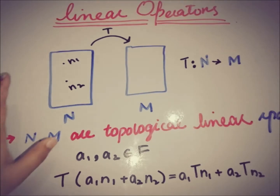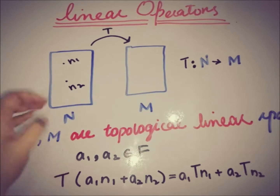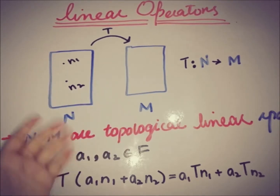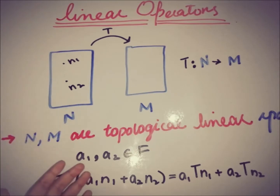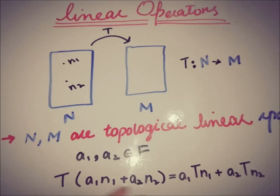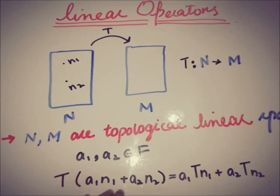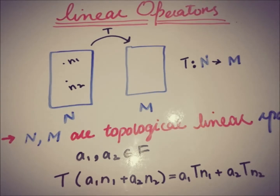If we have a mapping from one linear topological space to another, then T is an operator from N to M. If we have two elements from the field and two elements from the linear topological space N and the linearity equation is satisfied, we can say that the operator is a linear operator. Now let's move toward some examples of a linear operator.